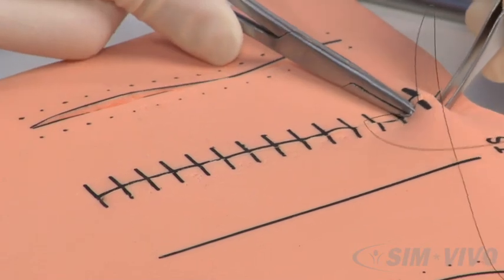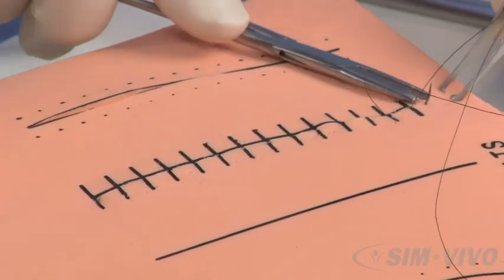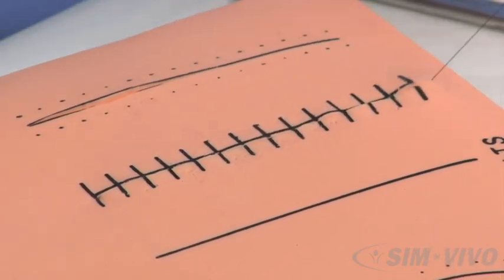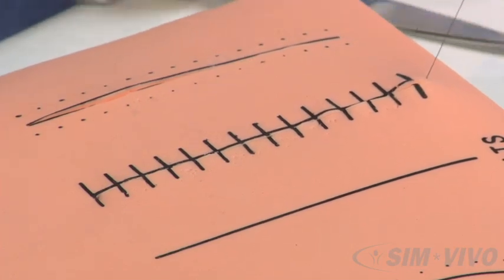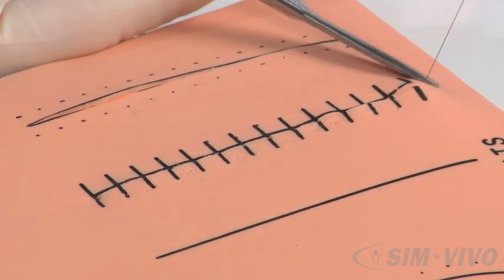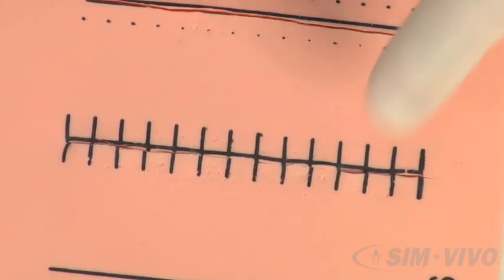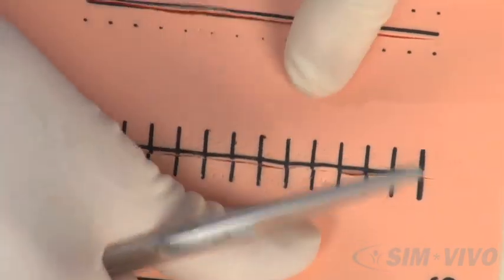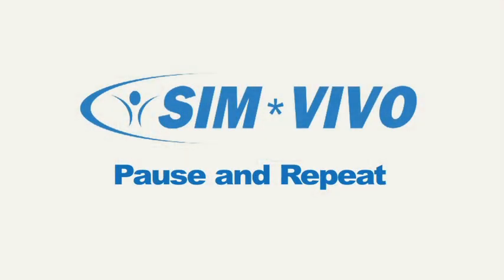Pass the needle deep into the end of the incision and bring it out the adjacent skin about a centimeter or two away from the end of the incision. Pull it taut and cut it at the skin level. Practice this several times on the straight and curved lines of the suture board.